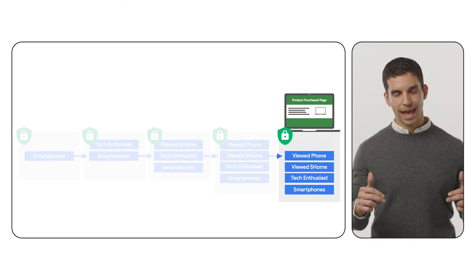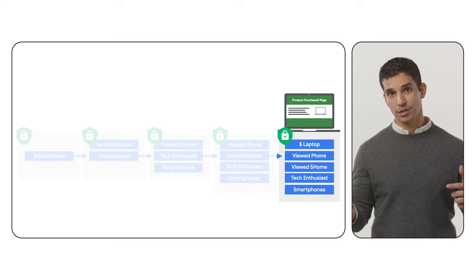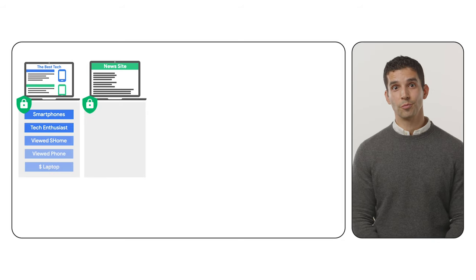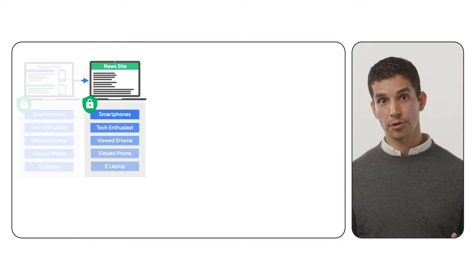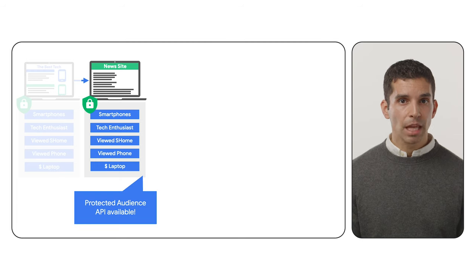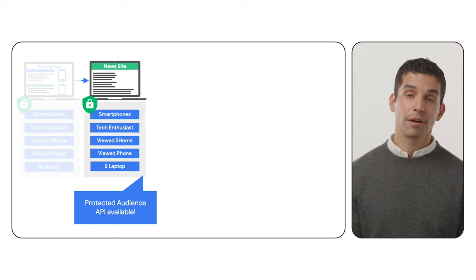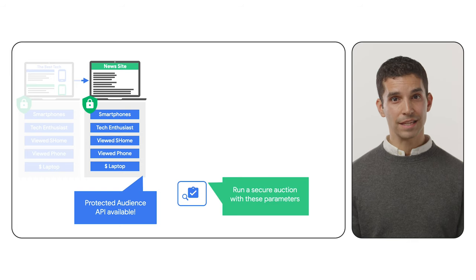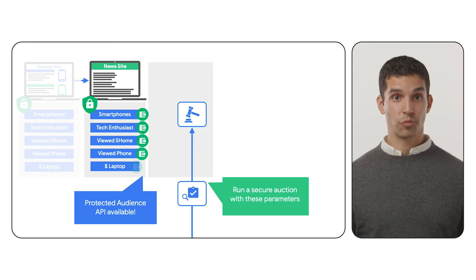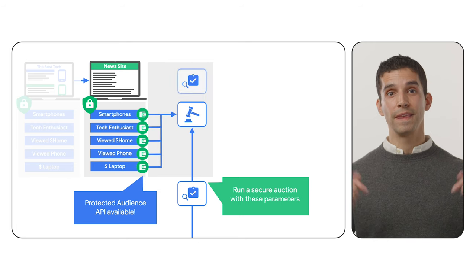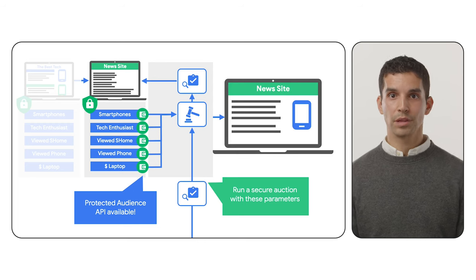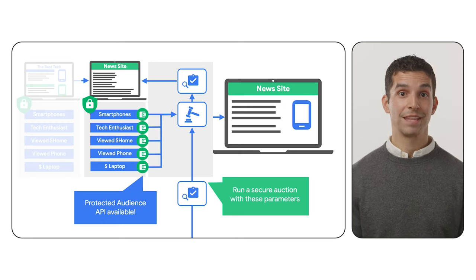So if the audience is on the device, how is that used to make a relevant ad experience? That's where the secure auction comes in. With all those audiences on the device, the user then browses over to the news site, taking those audiences with them. The publisher itself or the ad tech partner they are working with can observe that the Protected Audience API is available. They don't know what audiences are in the browser, but they can see they can kick off this secure auction. So the publisher or the ad tech partner can tell the browser to kick off an auction with these parameters. Similar to how things work today, a real-time auction kicks off, except it's maintained within this secure environment, either on device or within a trusted execution environment. Each audience independently competes for the opportunity. The publisher and the ad tech partner score them, and the best ad wins. Then the ad is rendered on the news site.